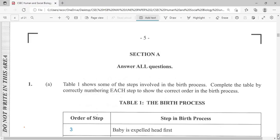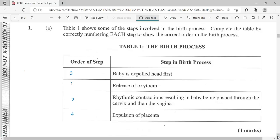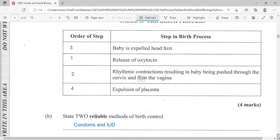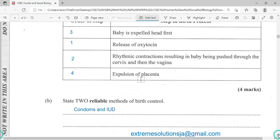Table 1 shows some of the steps involved in the birth process. Complete the table by correctly numbering each step to show the correct order. The first thing that is going to happen, you are going to have the release of oxytocin followed by rhythmic contraction which will result in the baby being pushed through the cervix and vagina. Then we have the baby being expelled head first, followed by the expulsion of the placenta.